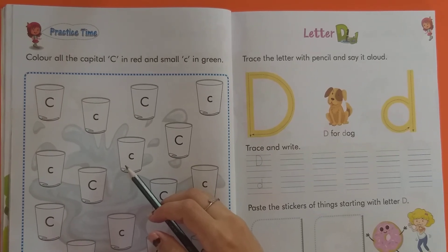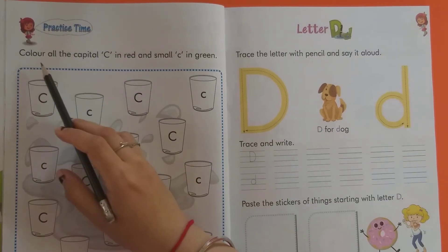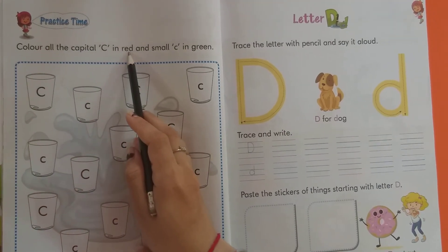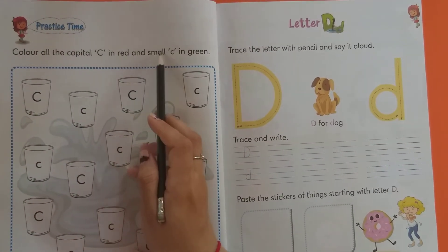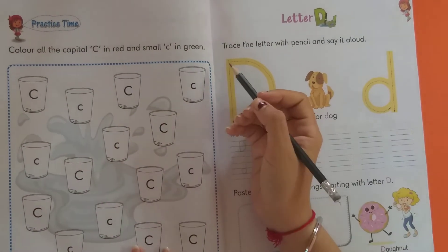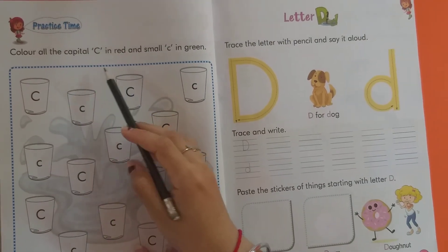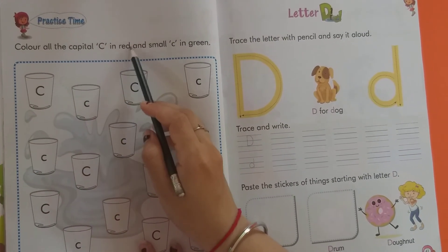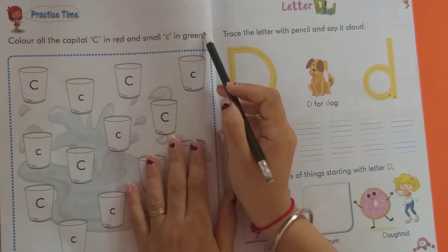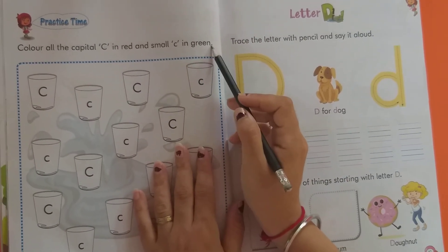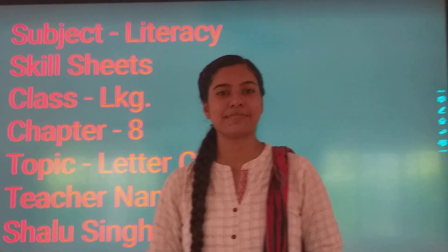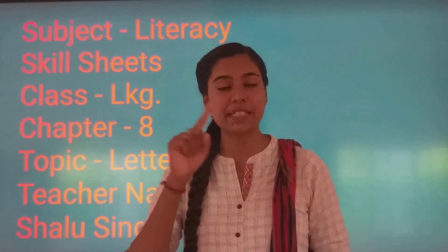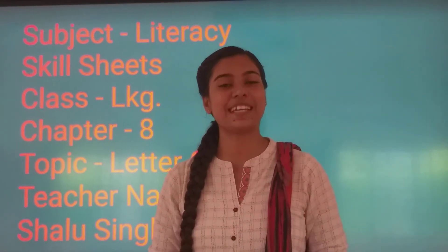Now there is a fun work for you. Color all the capital C in red and small c in green. Children, you have to color the capital C with red color and small c with green color. So children, please practice this letter — capital C and small c.